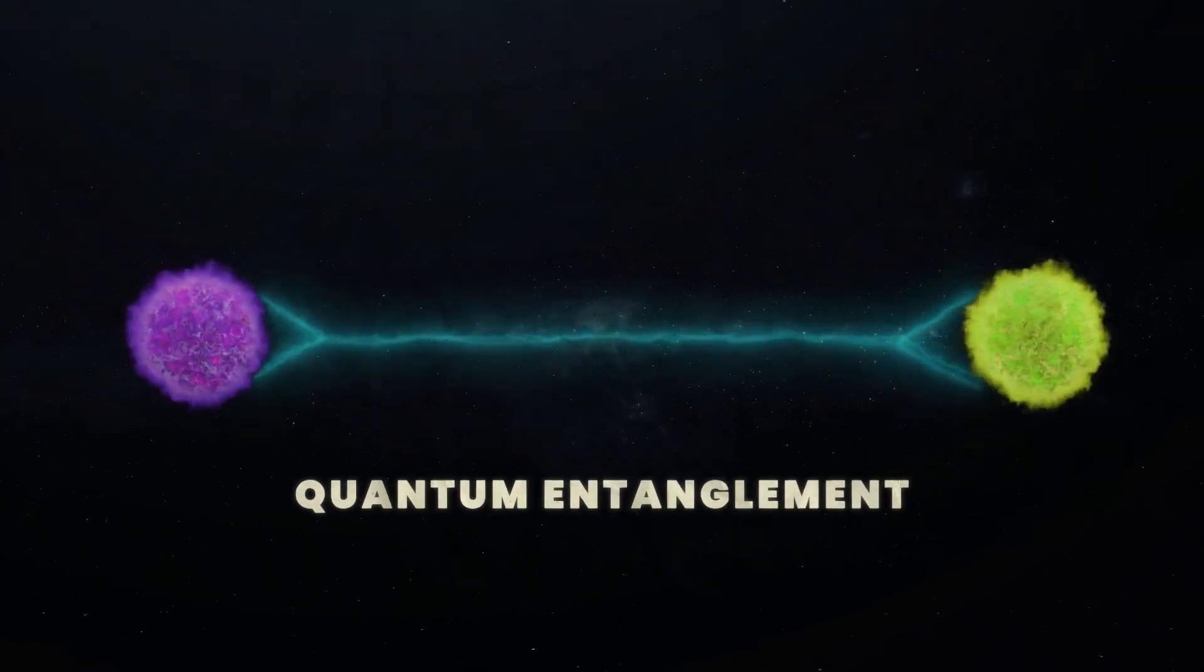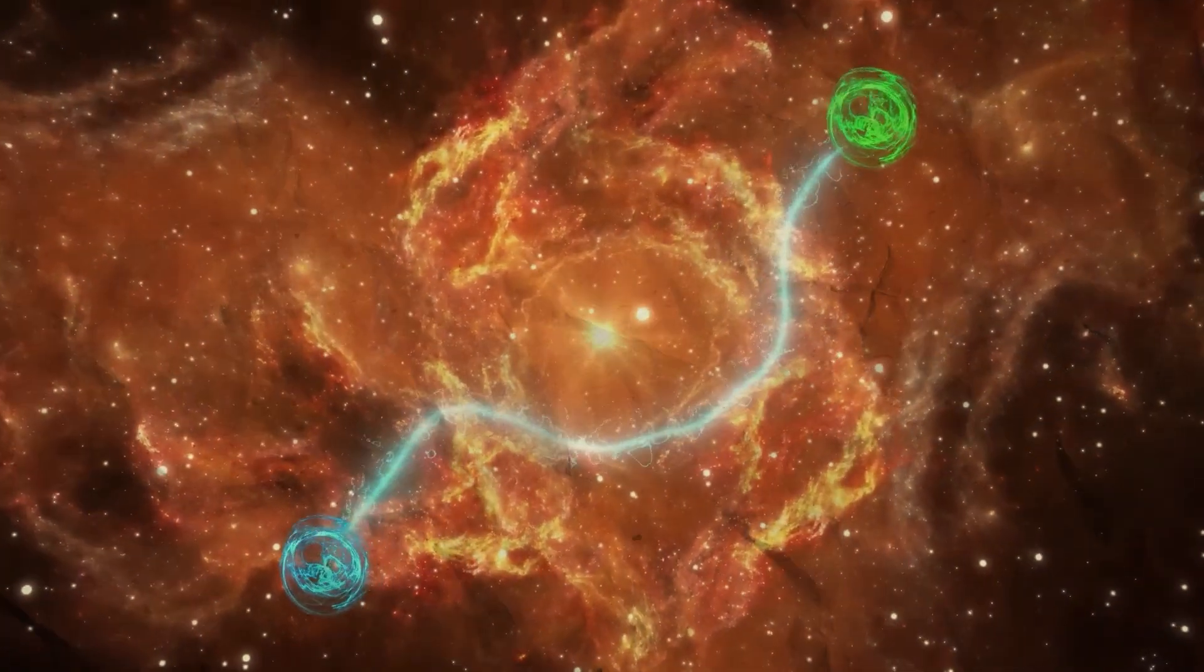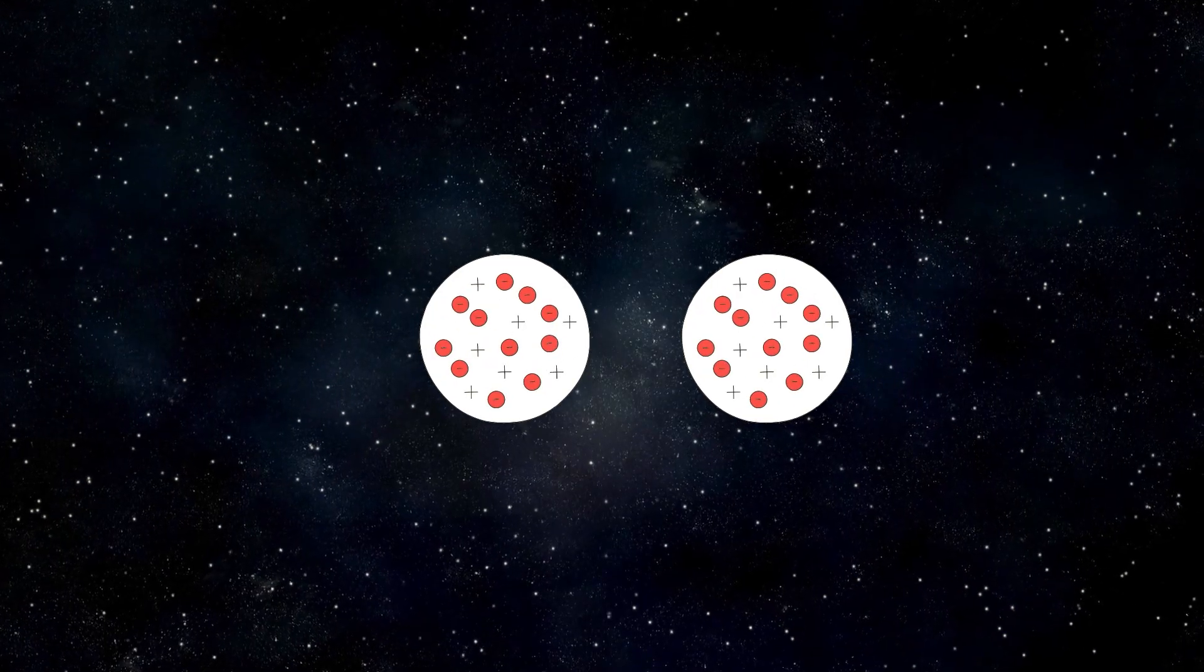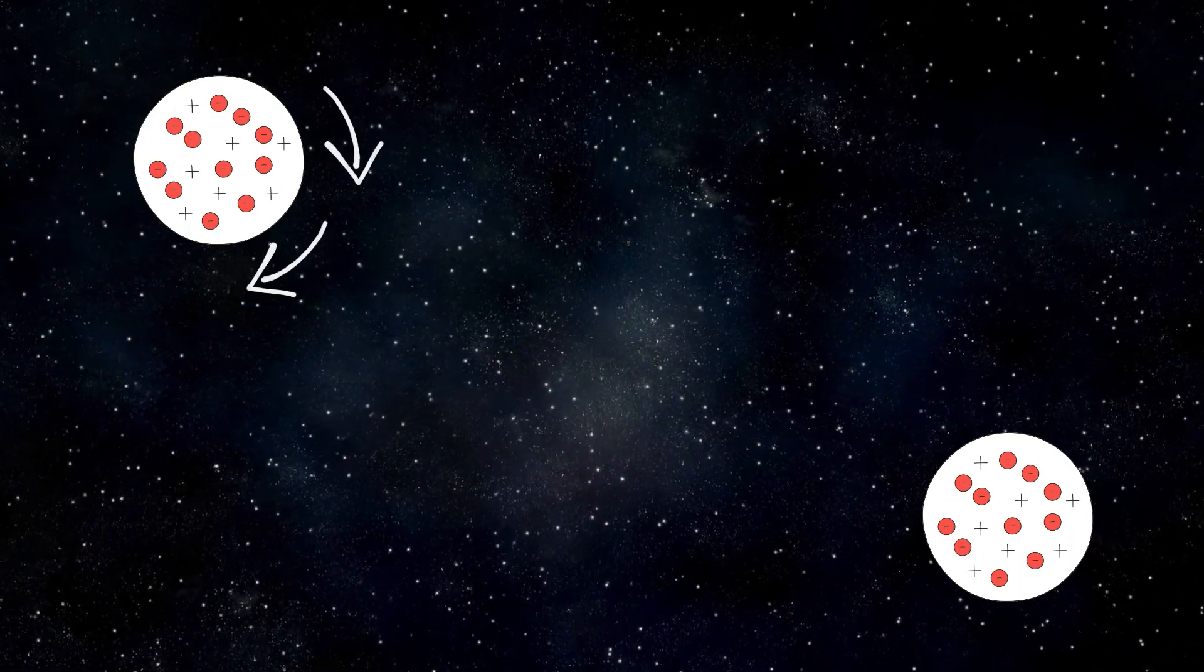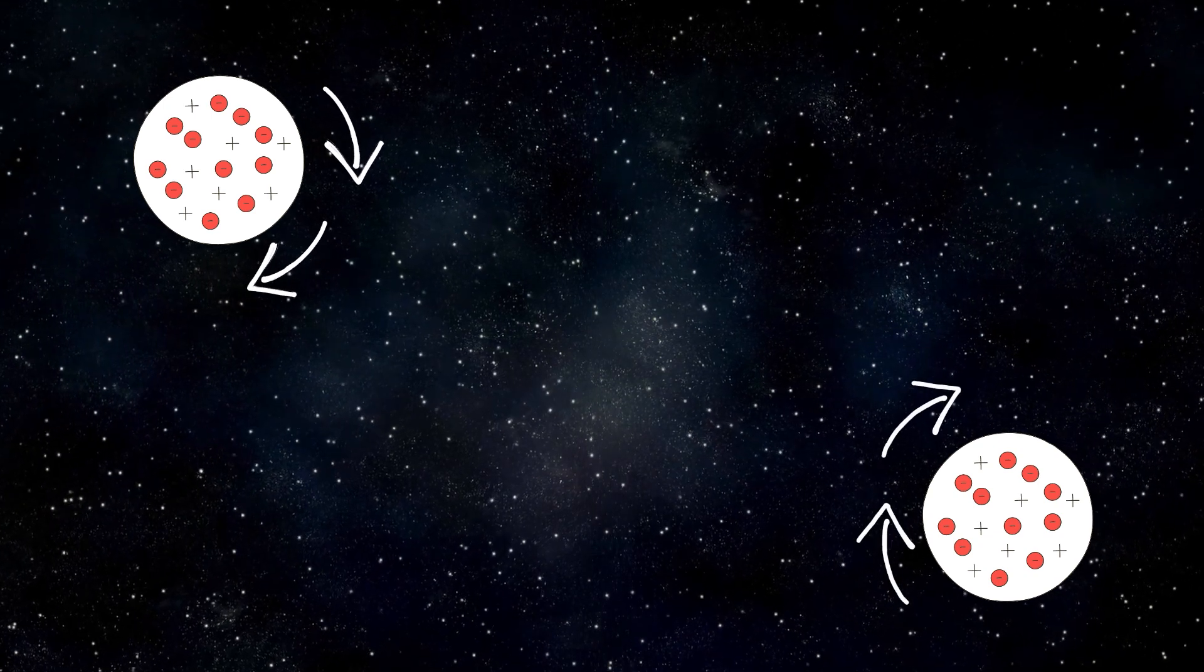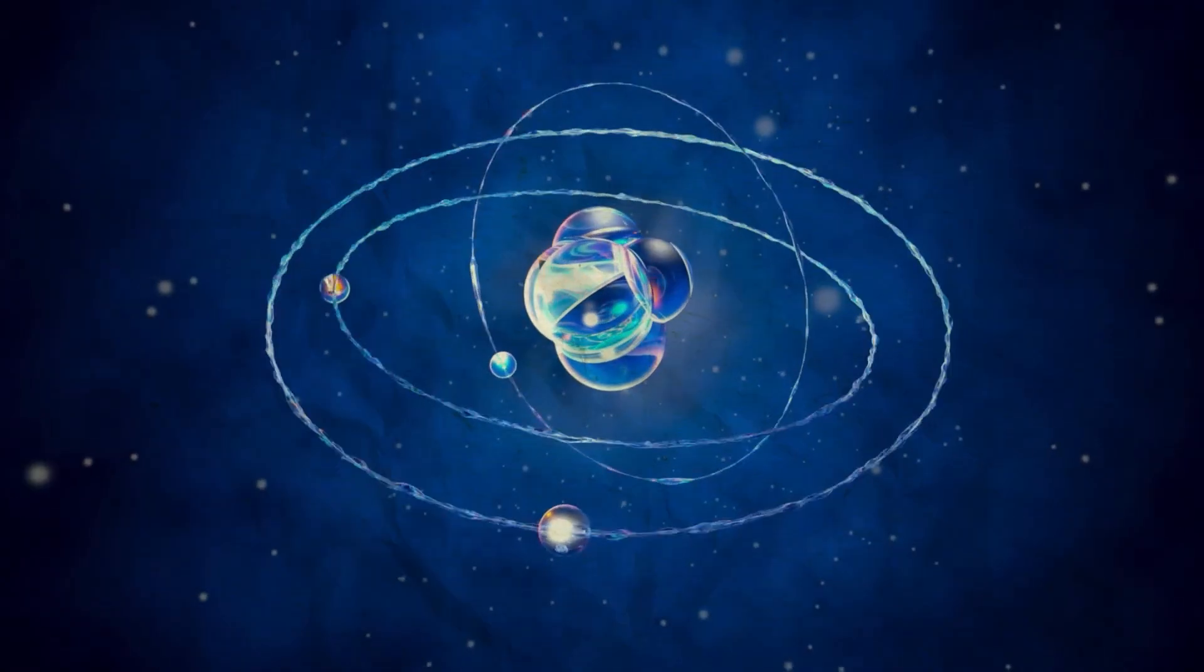We can better understand this with an example. Consider two entangled particles separated billions of light years apart. If one particle spins clockwise, then the other particle would instantly spin in the opposite direction, counterclockwise. This characteristic of quantum entanglement has been verified by scientists.